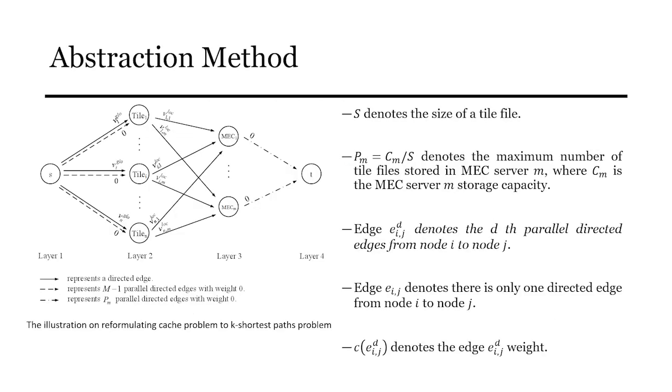In our specific case, the cache distribution problem can be reformulated as a graph with a single source and a single sink, which is a DAG. S denotes the size of a tile field. PM denotes the maximum number of the tile fields stored in MEC server M, where CM is the MEC server M storage capacity. Edge EIJD denotes the parallel directed edges from node i to node j. Edge EIJD denotes there is only one directed edge from node i to node j. CEEIJT denotes the edge weights.